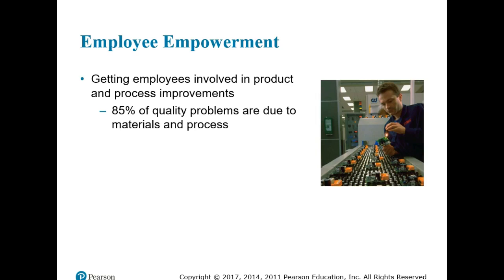When non-conformance occurs, workers are seldom at fault — either the product was designed wrong, the process was designed wrong, or the employee wasn't properly trained. Techniques for building an employee empowerment program include: building communication networks that include employees, developing open and supportive supervisors, moving responsibility from managers and staff to production employees, building high-morale organizations, and creating formal organizational structures such as teams and quality circles.